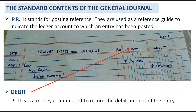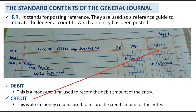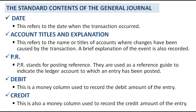Next is debit. This is a money column used to record the debit amount of the entry. In this example, we have 100,000 under the debit column, meaning 100,000 is the debit amount. Next, we have the credit — also a money column used to record the credit amount of the entry. So our credit amount is 100,000. To review: the standard contents are the date, account titles and explanation, PR, debit, and credit.